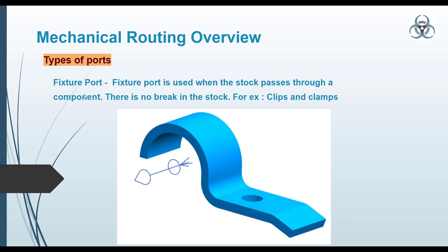A fixture port is the opposite — it is not a termination but a continuous routing path. A fixture port is used when the stock passes through a component with no break in the stock. As you can see here, this is a clip and this symbol represents a fixture port. When a routing pipe comes to this port, it does not stop — it passes through the clamp. Whereas with a fitting port, the pipe has to stop. That is the major difference between a fitting port and a fixture port.